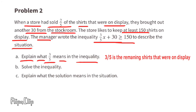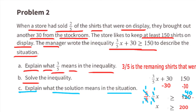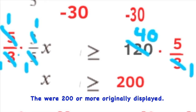Part b: Solve the inequality. First subtract 30 from both sides — you're left with three-fifths times x is greater than or equal to 120. To make it 1x, multiply by the reciprocal of three-fifths: five-thirds times three-fifths times x equals x, and 120 times five-thirds equals 200. The solution is x is greater than or equal to 200. Part c: The solution means there were 200 or more shirts originally on display.